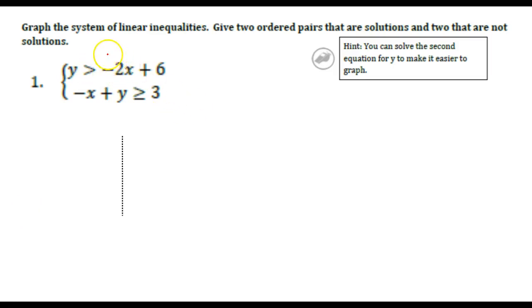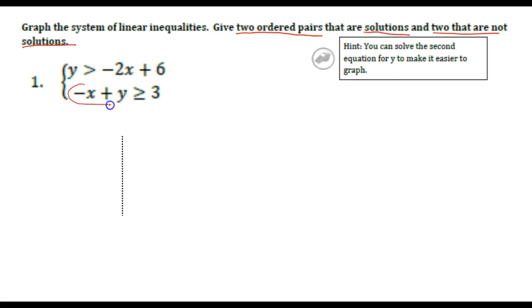Alright, switching back to some of the problems in your packet. One of the first ones they ask you to do is to graph a system of inequalities, give two ordered pairs that are solutions and two that are not solutions. You'll notice with one of these though, y is not by itself, so we're going to first solve the second inequality for y to make it easier to graph.